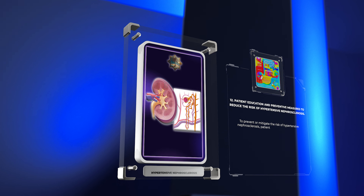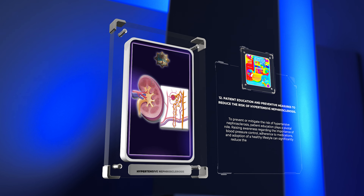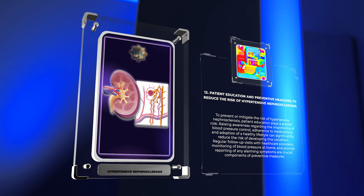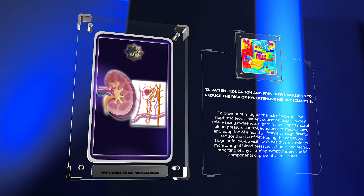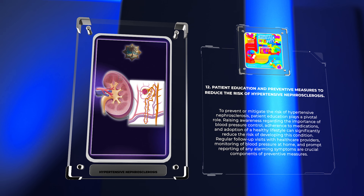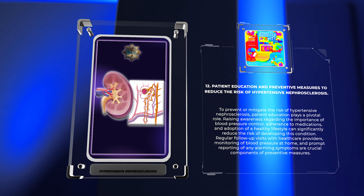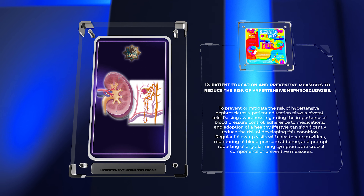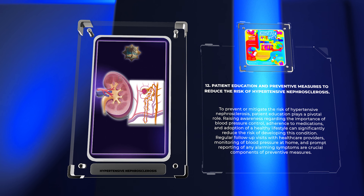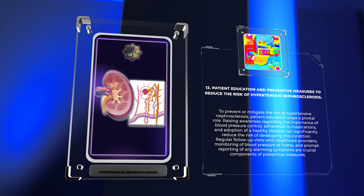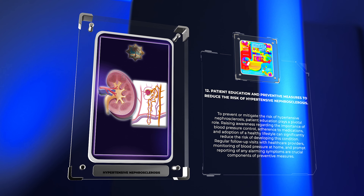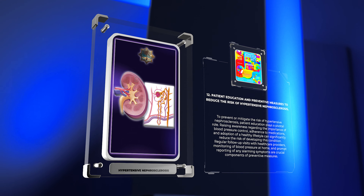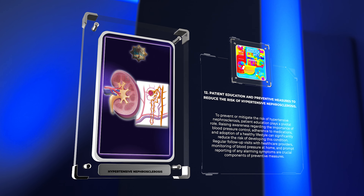To prevent or mitigate the risk of hypertensive nephrosclerosis, patient education plays a pivotal role. Raising awareness regarding the importance of blood pressure control, adherence to medications, and adoption of a healthy lifestyle can significantly reduce the risk of developing this condition. Regular follow-up visits with healthcare providers, monitoring of blood pressure at home, and prompt reporting of any alarming symptoms are crucial components of preventive measures.